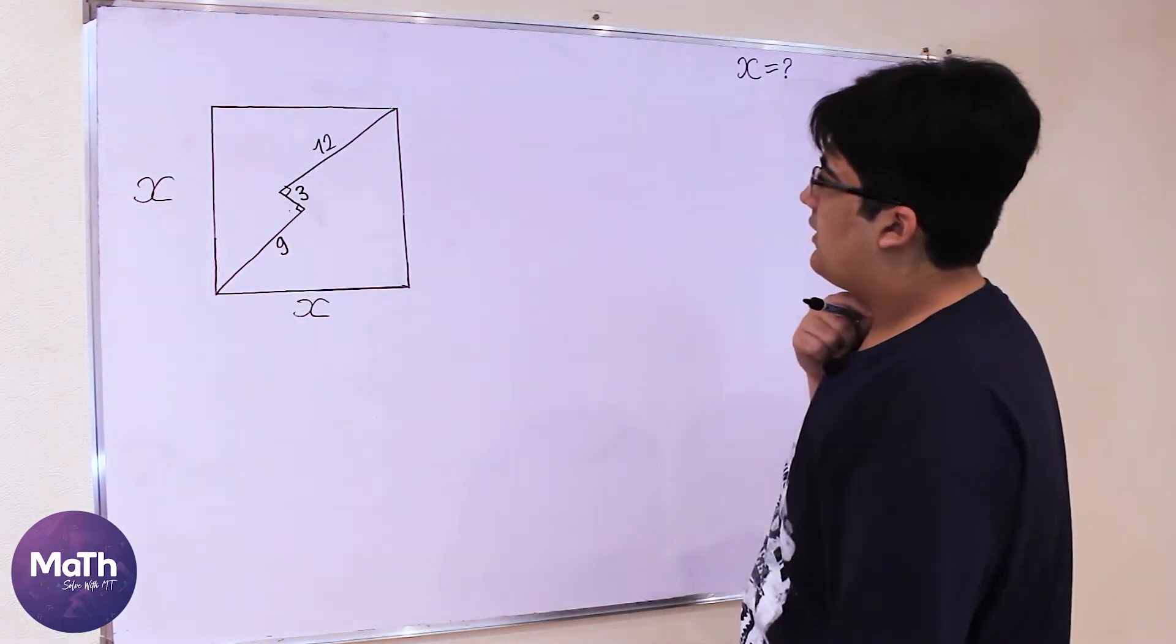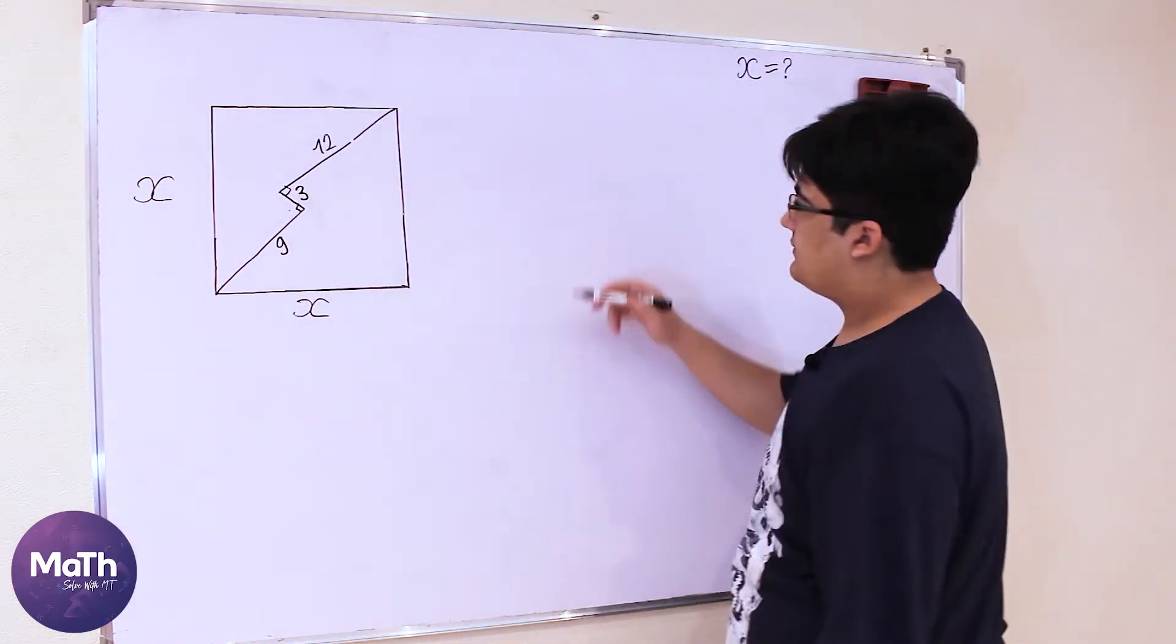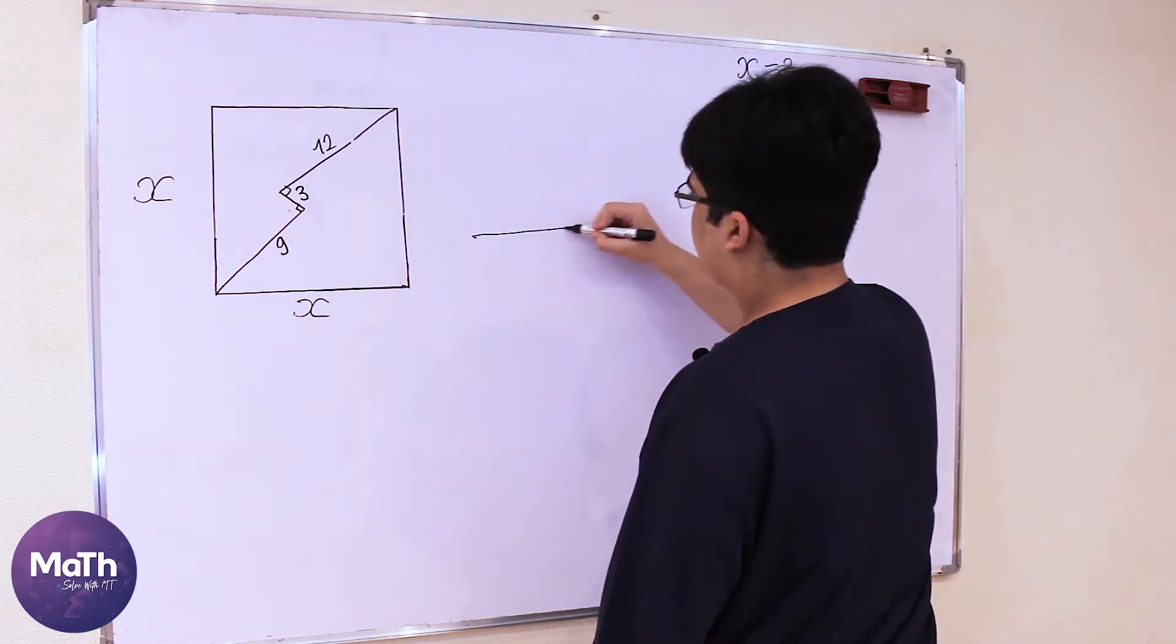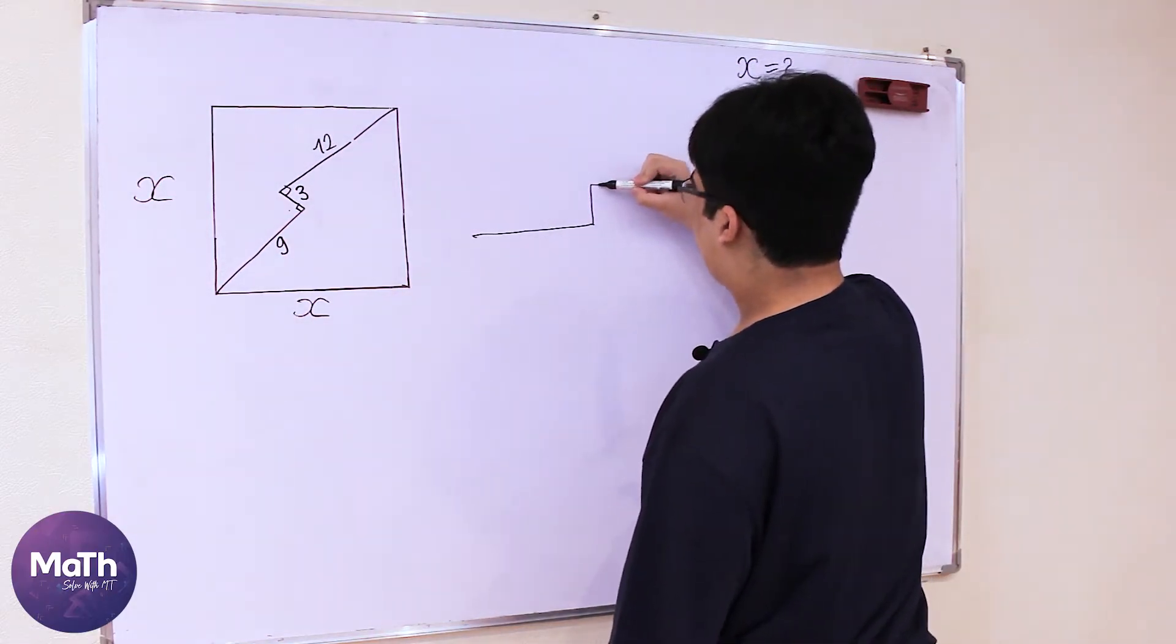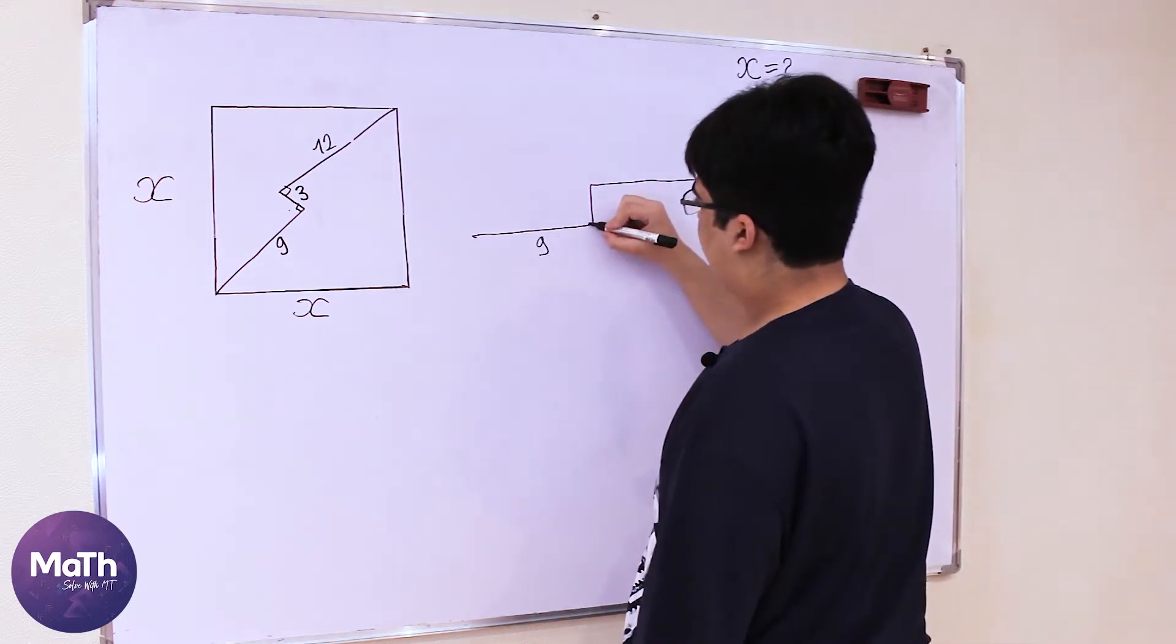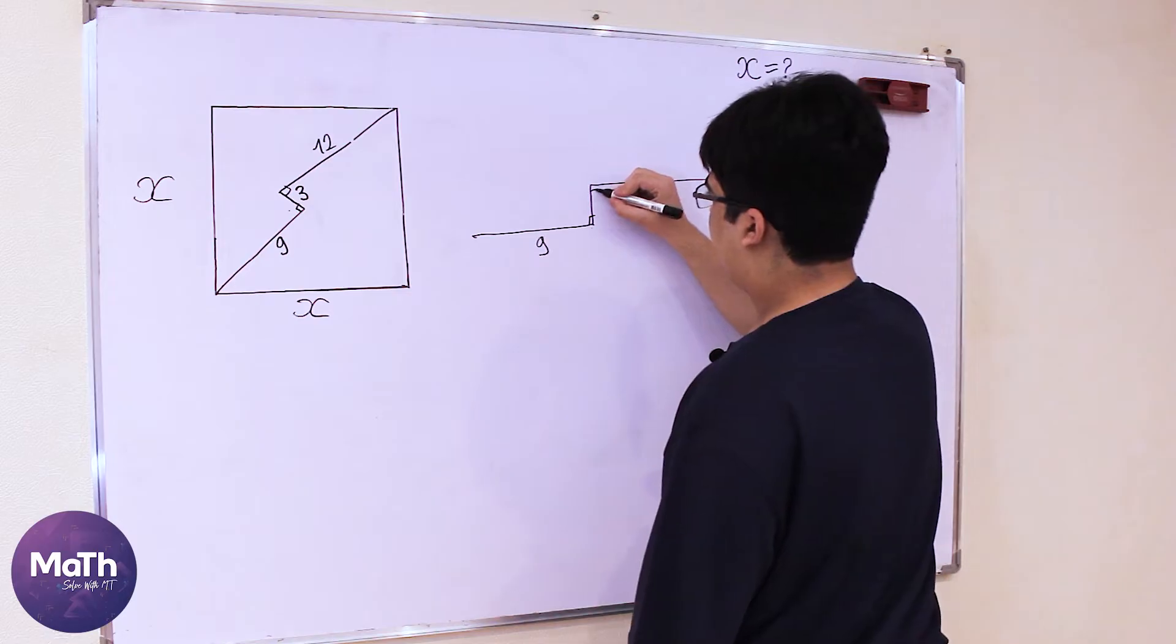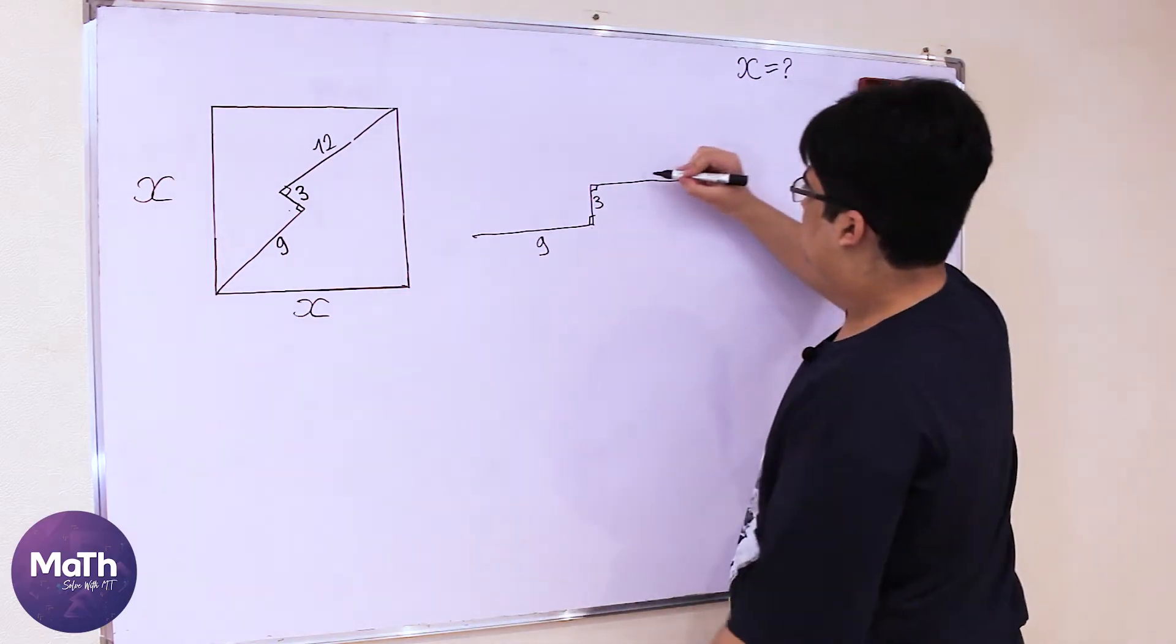So let's copy this and write it here. Here we have 9, this is a right angle and this is a right angle. This is 3 and this is 12.